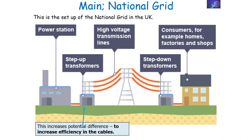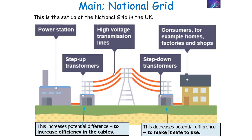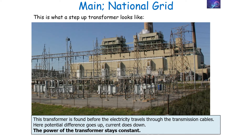This is the current setup of the national grid in the United Kingdom. The first thing you have is a step-up transformer, which is used to increase the potential difference, which increases efficiency in the transmission cables. That is then linked to the step-down transformers, which decrease the potential difference to make it safe to use. So in our national grid we have our step-up transformer, our transmission lines, and our step-down transformer.